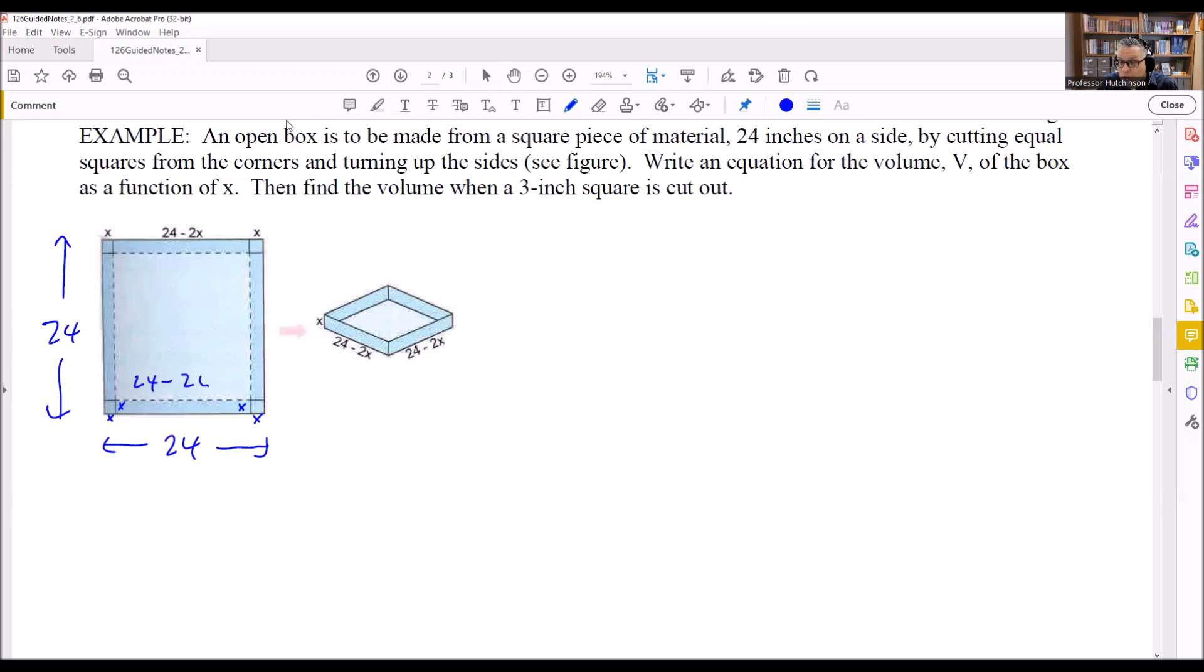And that's going to give us 24 minus 2x would be what this dotted line actually is. Now going up and down would be the same because if this is 24 and that's x and that's x here, that means that this dotted line up and down would also be the same thing, 24 minus 2x.